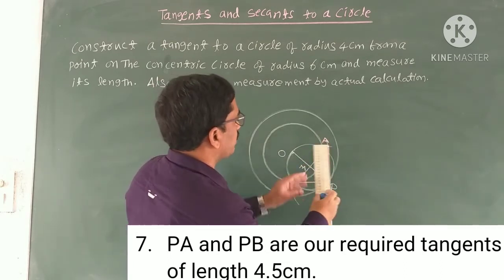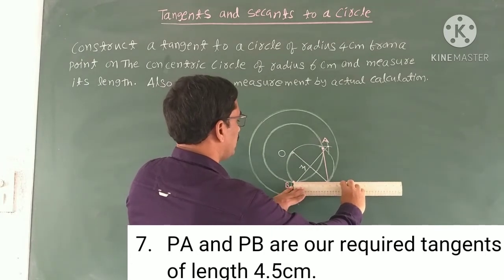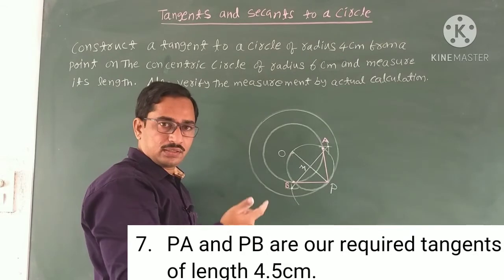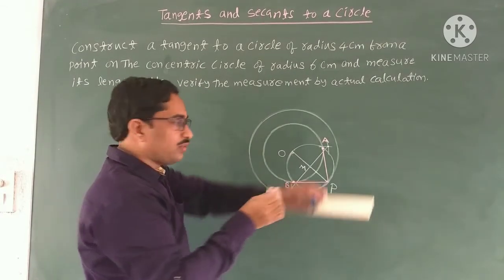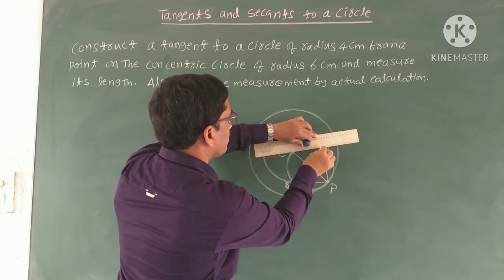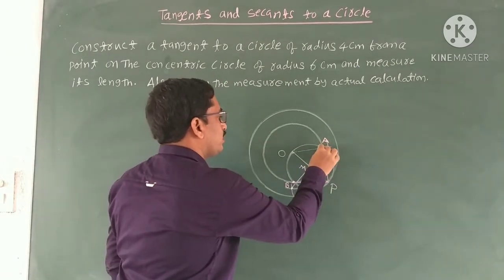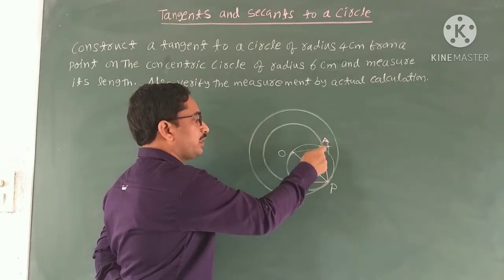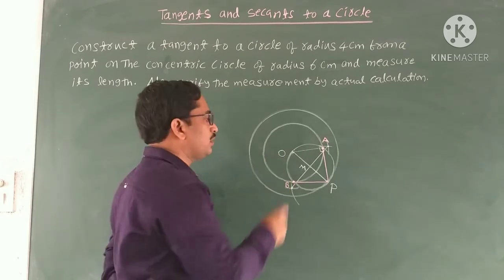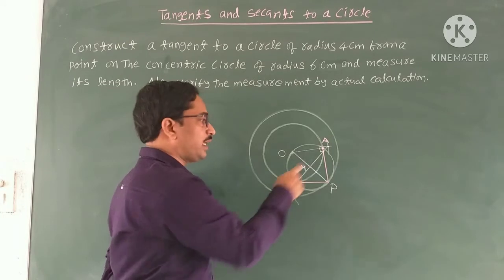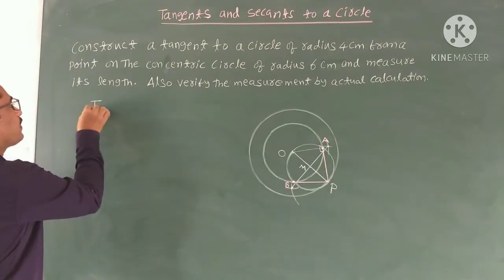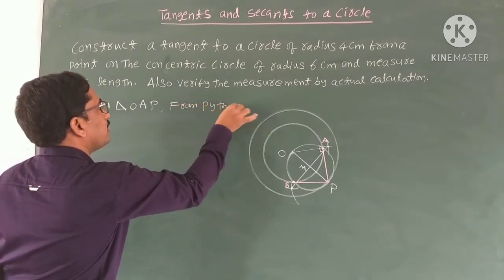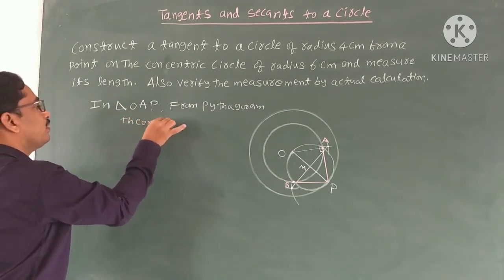Observe that the lengths of the tangents are equal: length of PA equals length of PB. Now we have to verify the measurement by actual calculation using the Pythagoras theorem. For this, join O and A. The angle at A is 90 degrees because PA is a tangent and OA is a radius — so OAP is a right-angle triangle with the right angle at A.